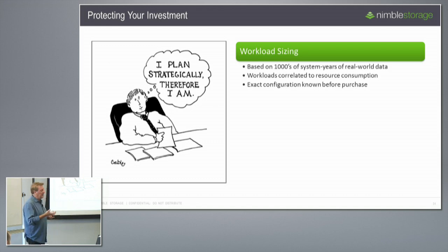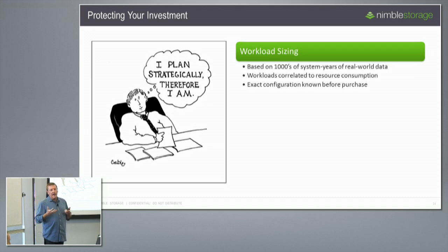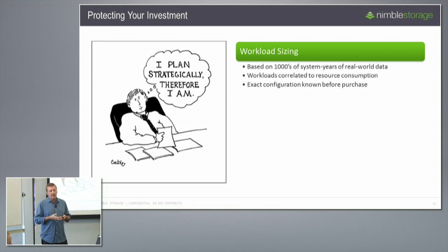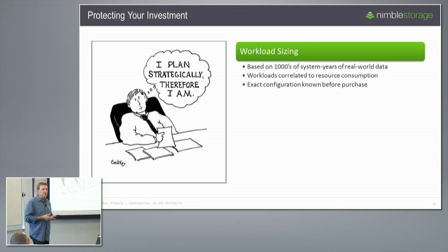We can even get information if customers provide it on how many users are within Exchange, and that might relate to the working set. Based on all of that information — say you're looking at buying a Nimble array to run N number of mailboxes of Exchange and N number of SQL databases of a certain size — we can actually calculate what kind of resource utilization that will occupy within the array to size the system correctly. We can even project that over the next three years of anticipated growth.